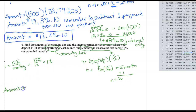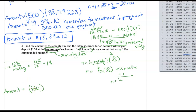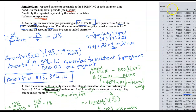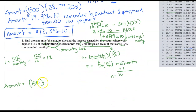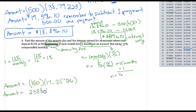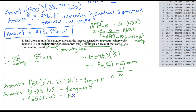The amount of our annuity is our $150 deposit times the table value at row 16, 1% column, which is 17.25786. Multiplying, we get $2,588.68. Then we subtract one payment of $150, giving us $2,438.68 as the amount in the account.